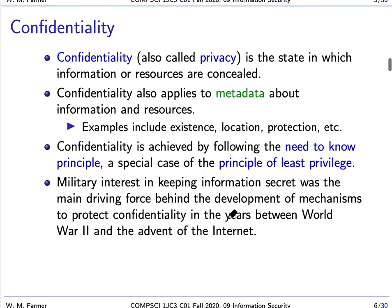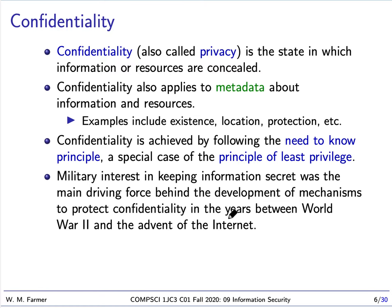Let's talk about confidentiality. It's also called privacy. Confidentiality is the state in which information and resources are concealed from people or systems that we want to conceal them from. Confidentiality also applies to metadata — data about other data — and we often want to have confidentiality of metadata as well. This metadata confidentiality can cover the existence of data, where the data is located, and what kind of protections are on the data.